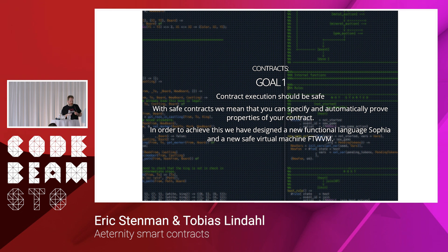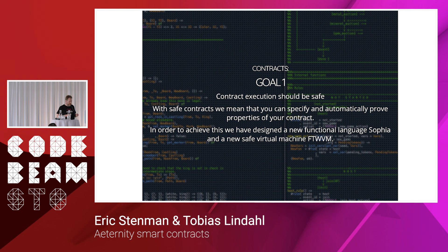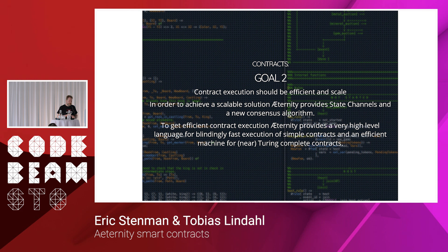Contract execution should be safe — meaning we can prove properties of the contract. You write your contract and then write properties you want to hold, like 'funds are only transferred once'. So we have designed a functional language called Sofia and the new FATE virtual machine. For efficiency and scalability, the main way to scale in Eternity is state channels.